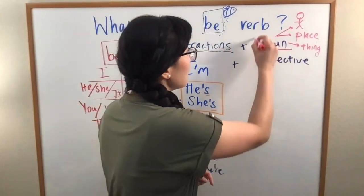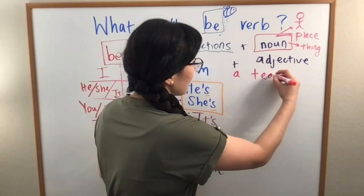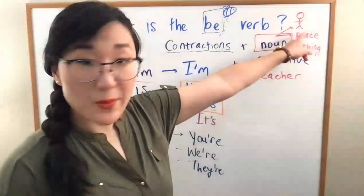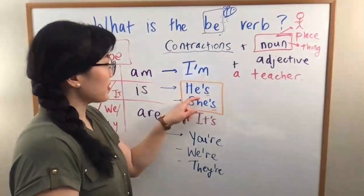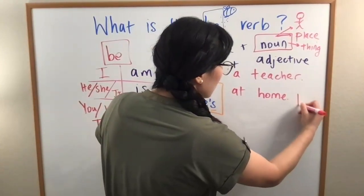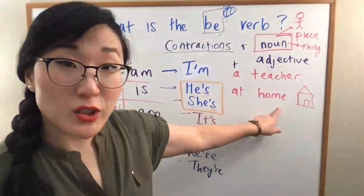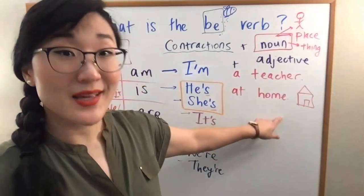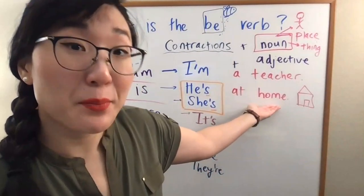So, I'm a... Let's do an example of a noun. I'm a teacher. A teacher. A teacher is a person. My brother. He's at home. A location. He's at school. He's at work. This is a noun. It is a place.